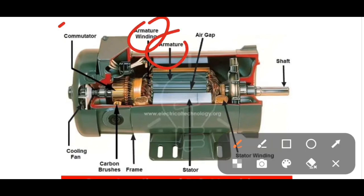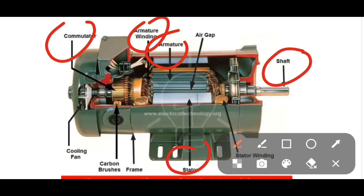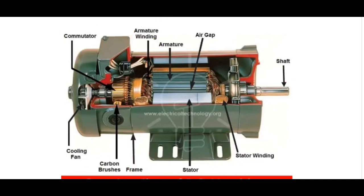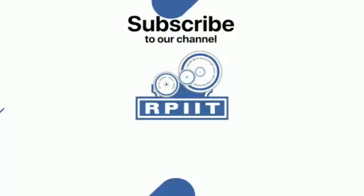The diagram shows where the armature is located, where the armature winding is, where the commutator is, and where the axis and other parts are. The outer frame, brushes, and cooling fan are also basic parts of the DC machine. We will discuss each one by one in the next video. Till then, thank you.